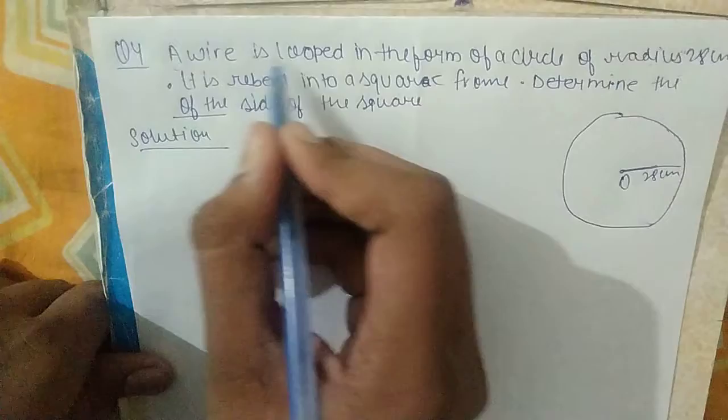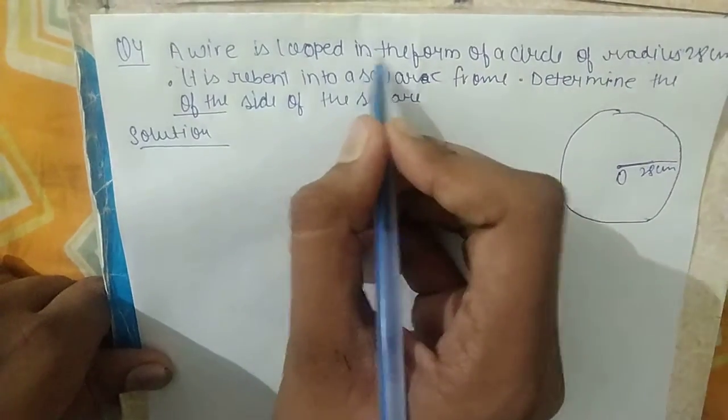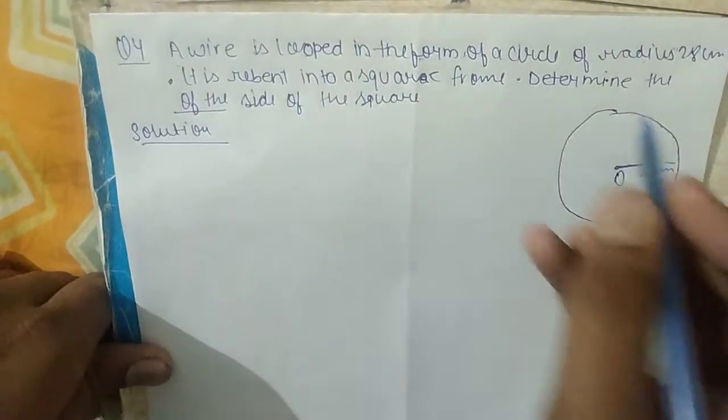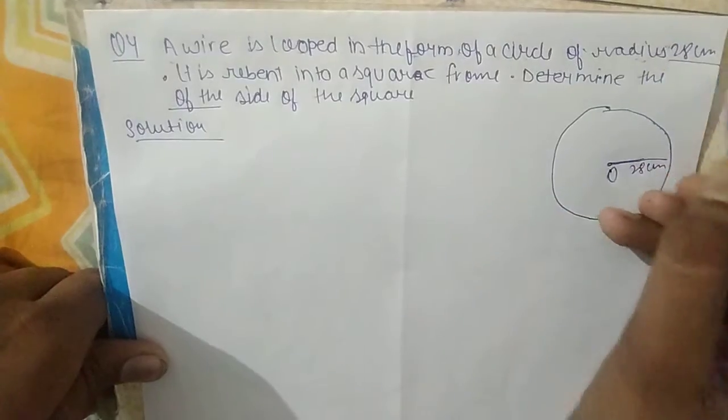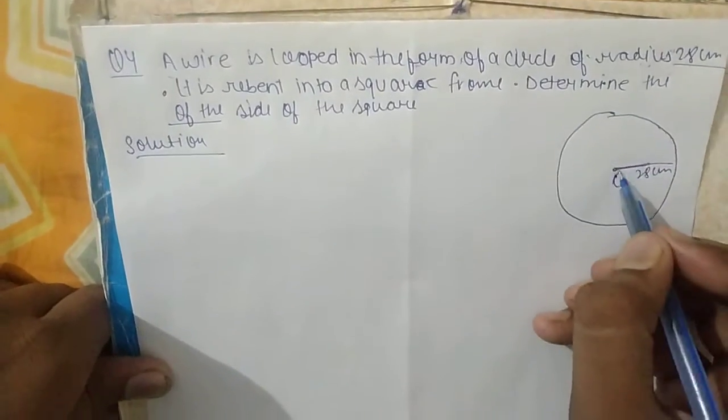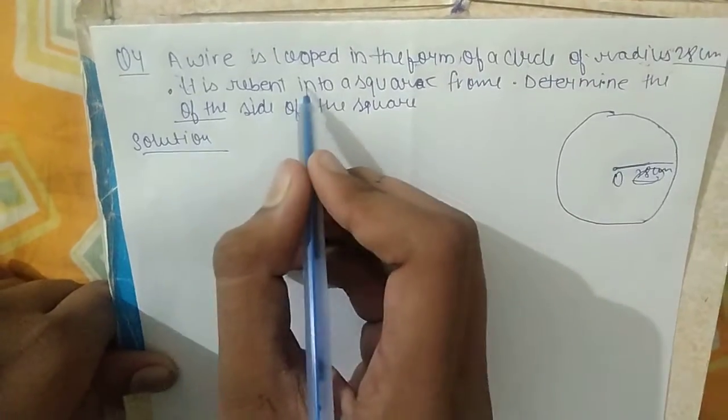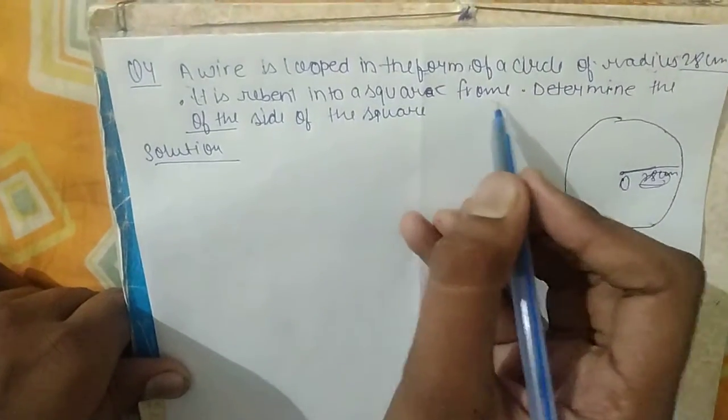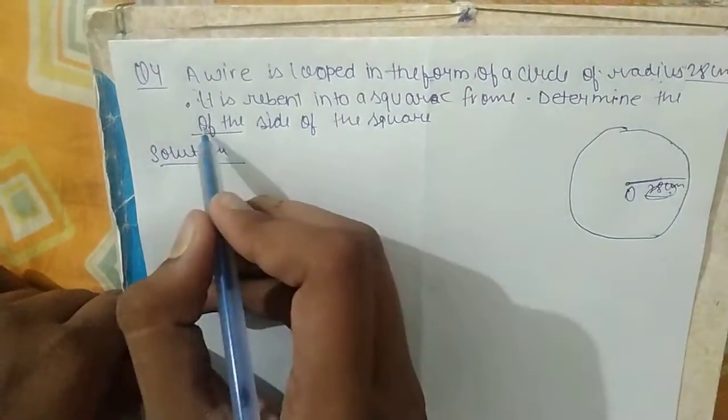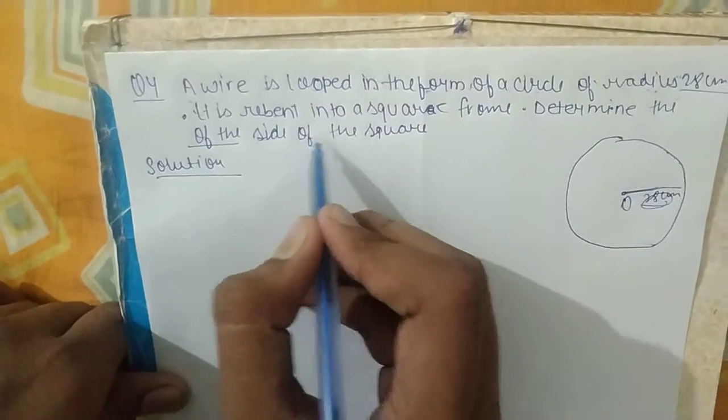A wire is looped in the form of a circle of radius 28 cm. It is re-bent into a square form. Determine the side of the square.